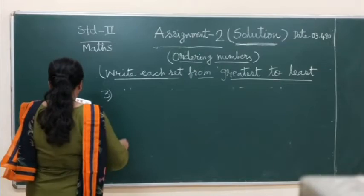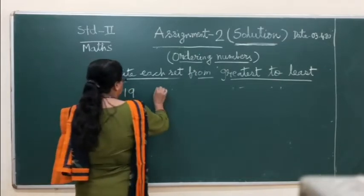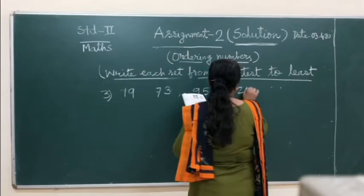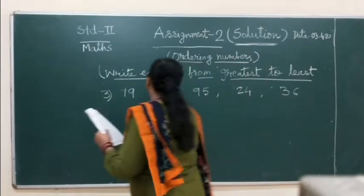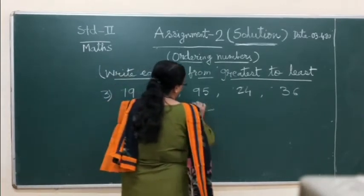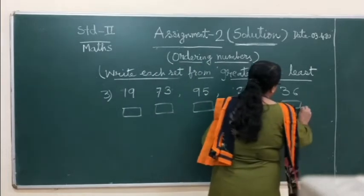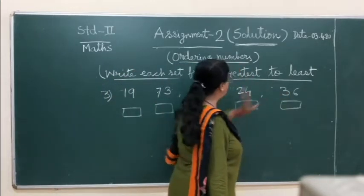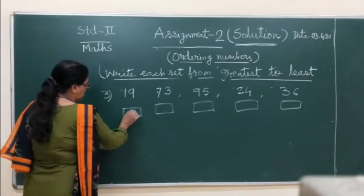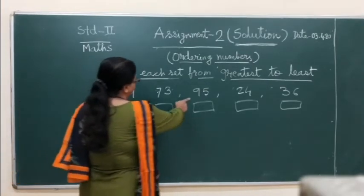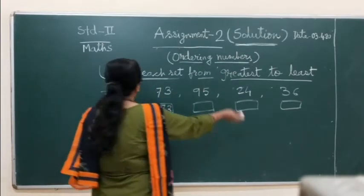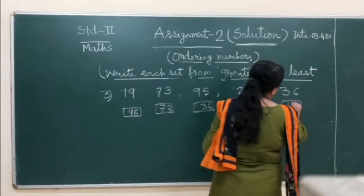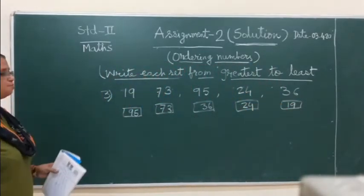Number 3, that is 90, 73, 95, 34, 56. Here we will find which one is the greatest. We will check the first number. This is 1, this is 7, this is 9, this is 2, this is 3. So 95 will come first, then 73, then 56, then 24, then last one is smallest one, 19. Hope you have done correctly.